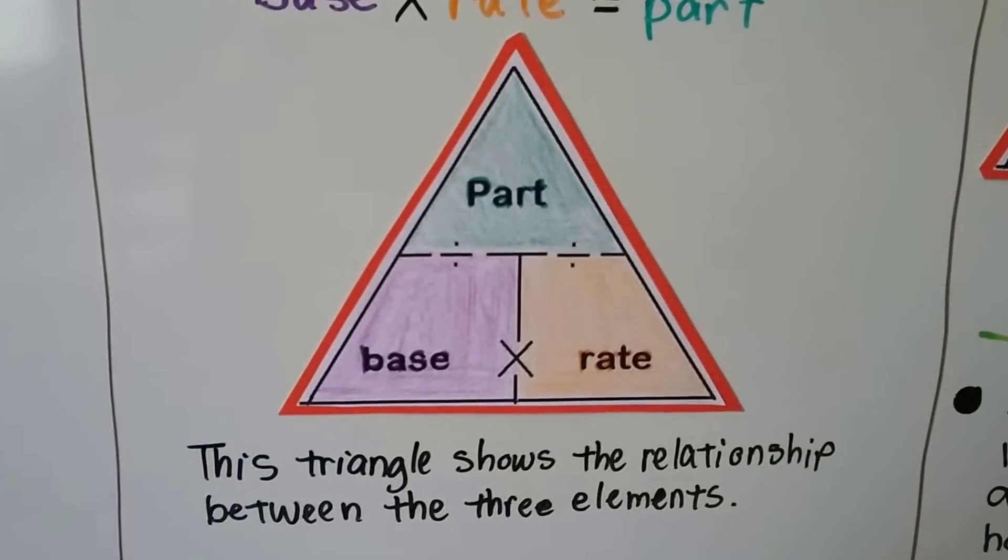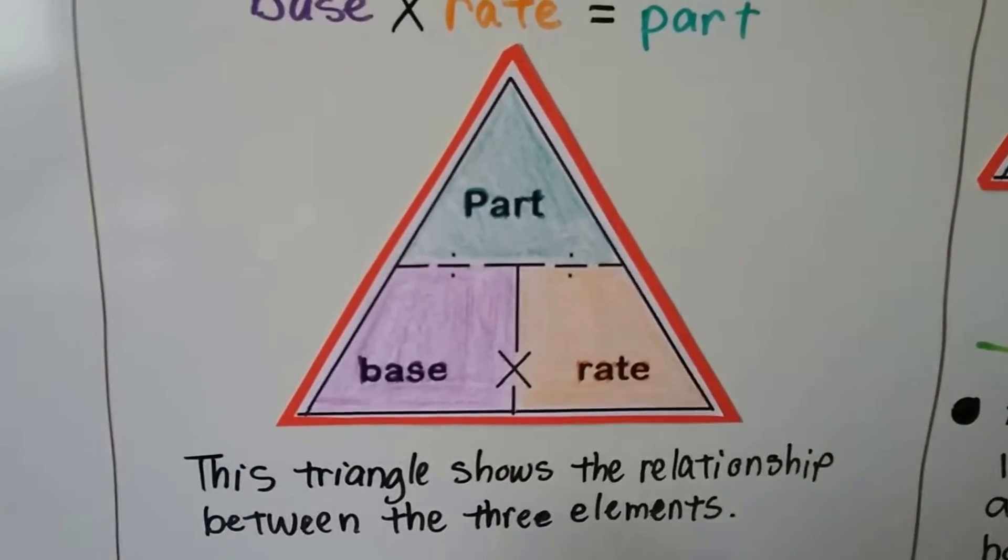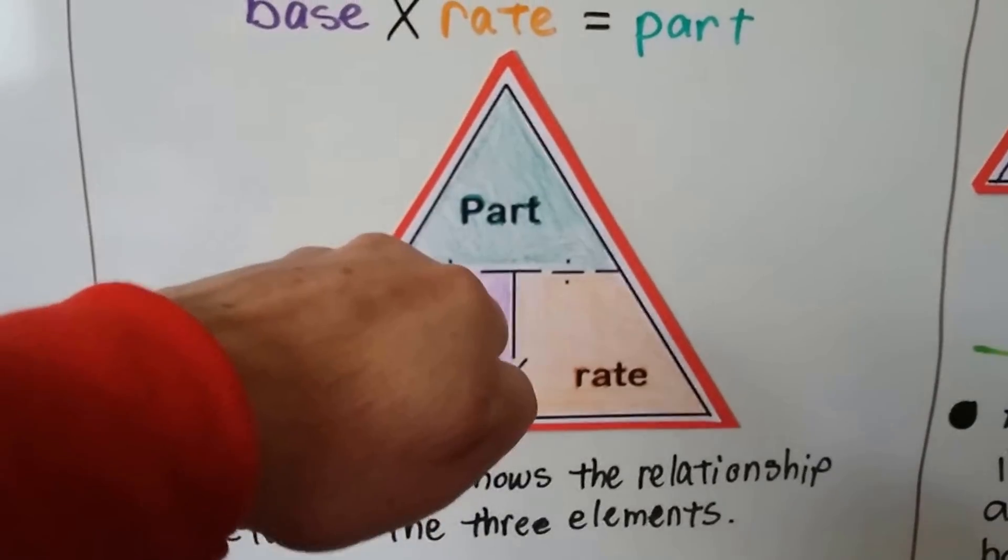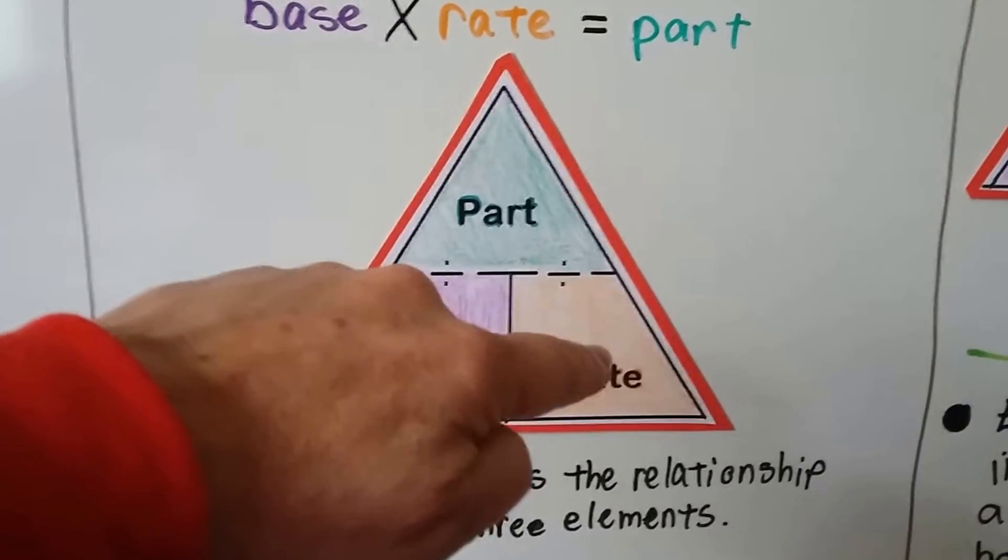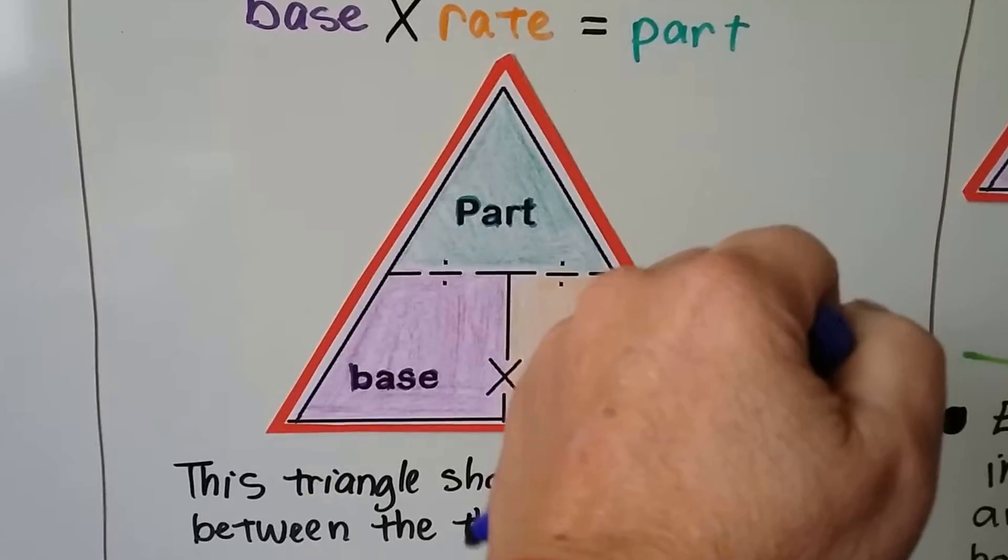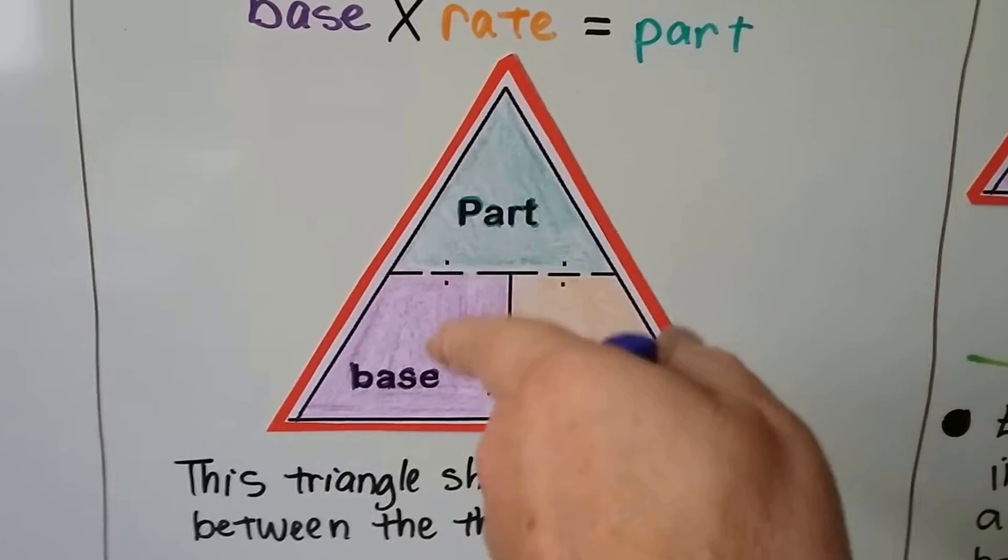This triangle shows the relationship between the three elements. If the base is missing, then we do part divided by rate. If the rate's missing, we do part divided by base.